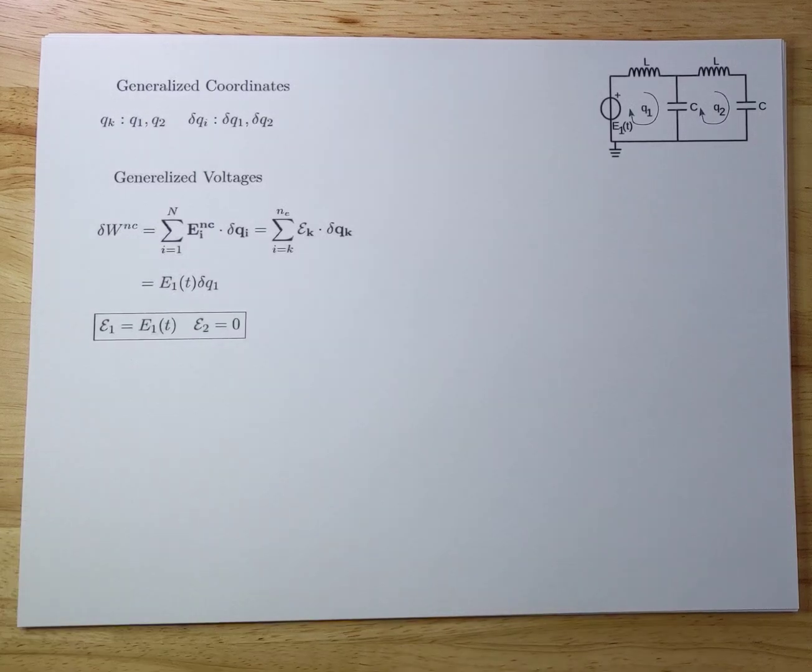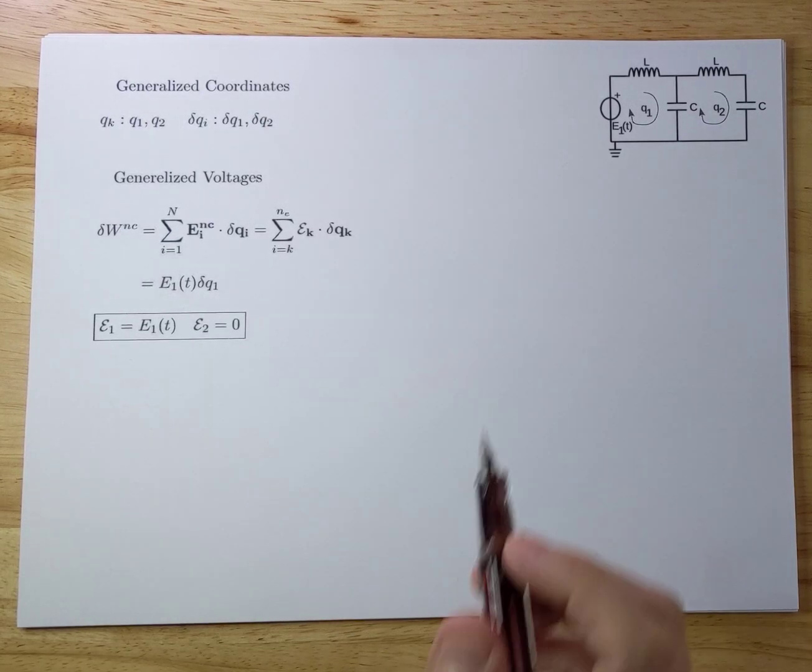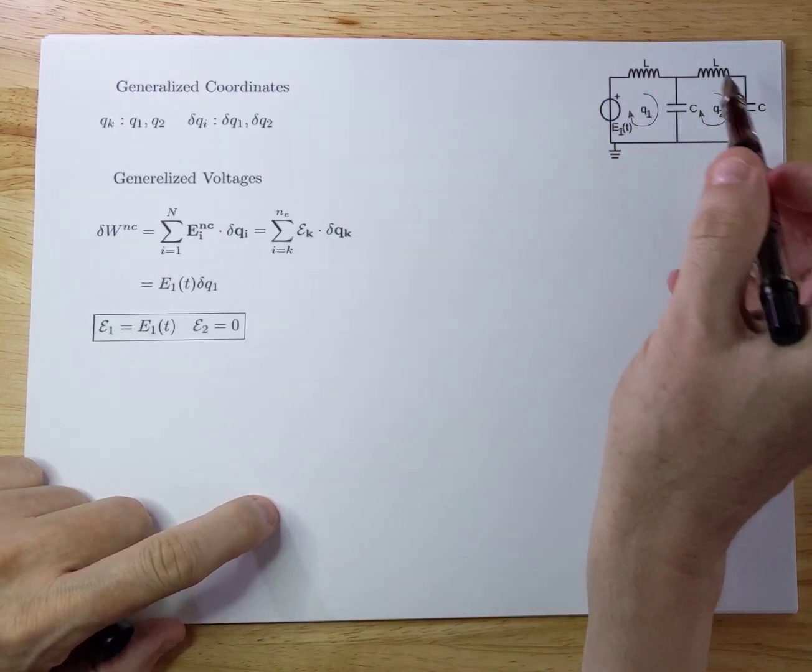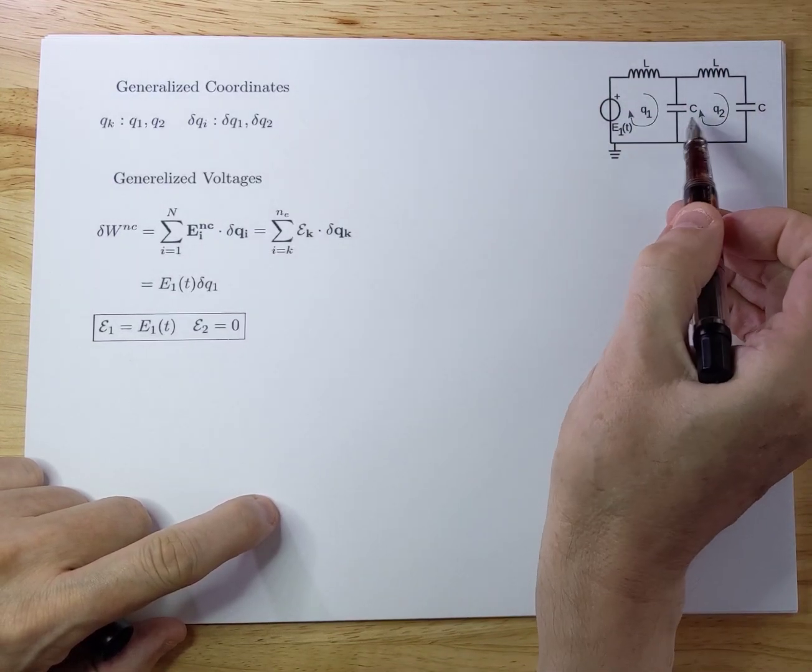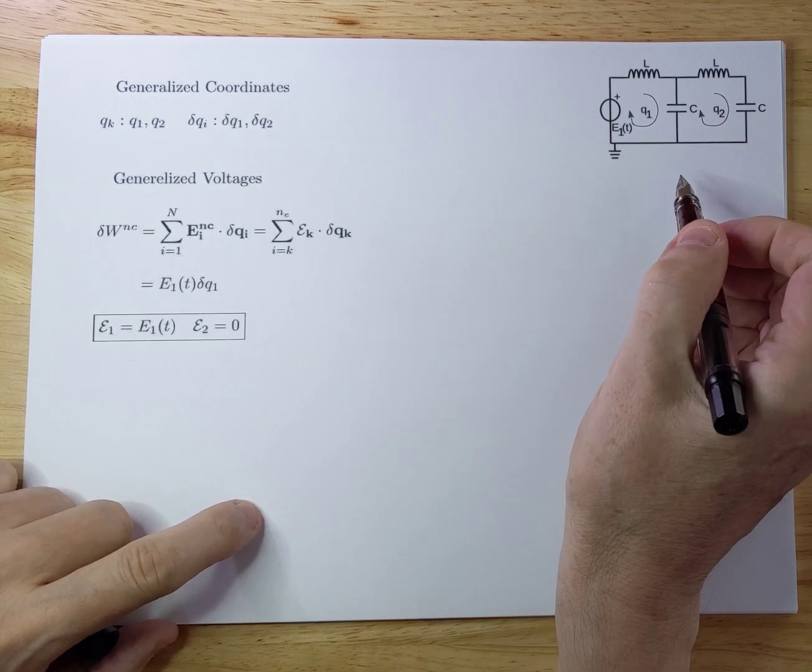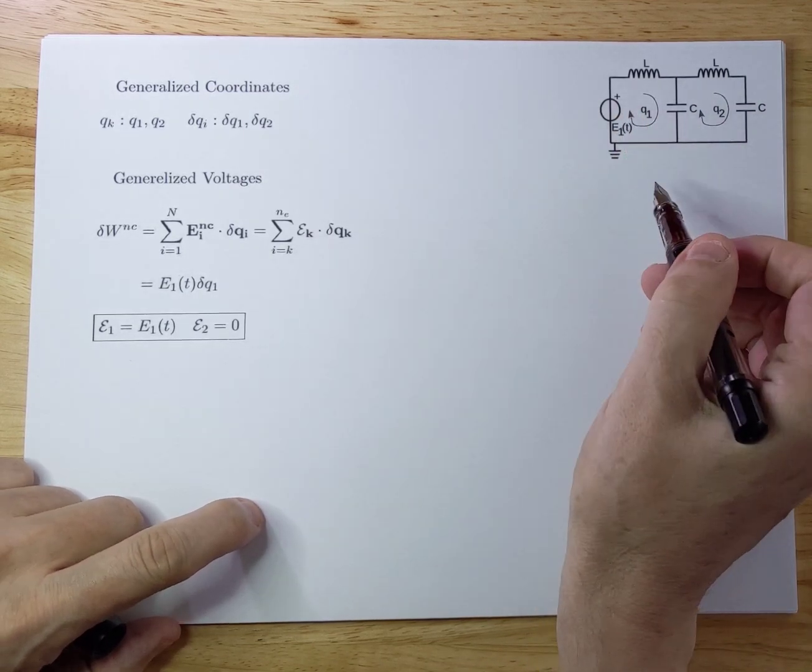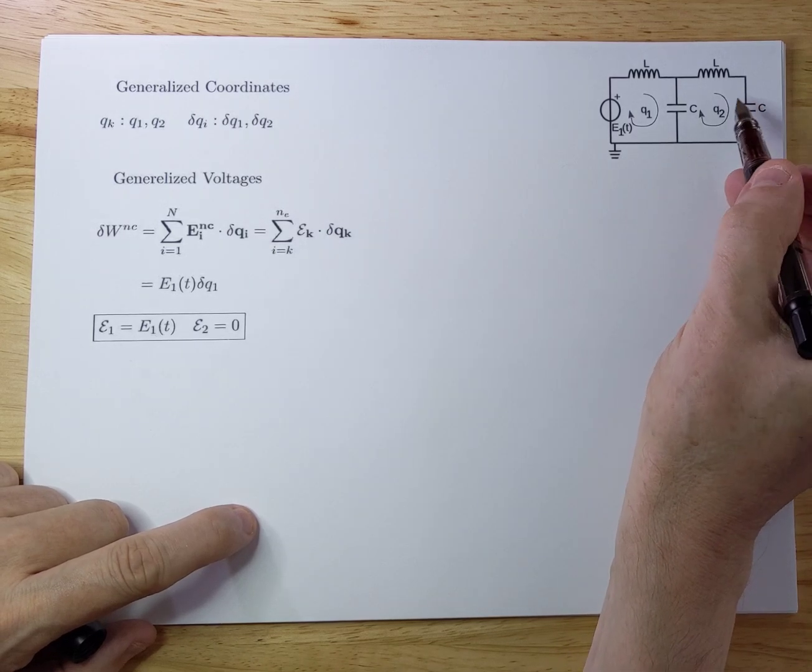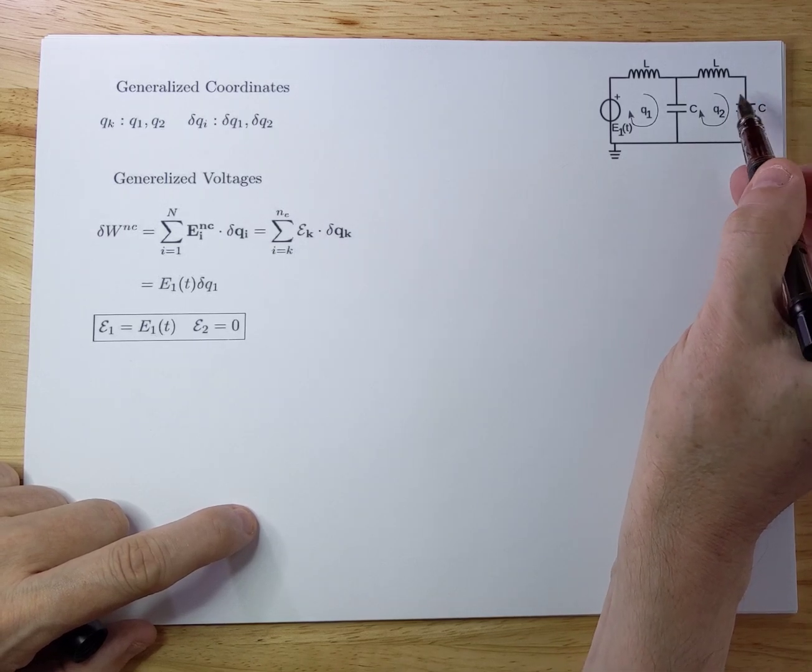Today I'm going to talk about an electronic circuit, which you see depicted over here. It consists of two inductors and two capacitors, and there's a power source. What I'm going to do is calculate the current through this capacitor. That's the target.